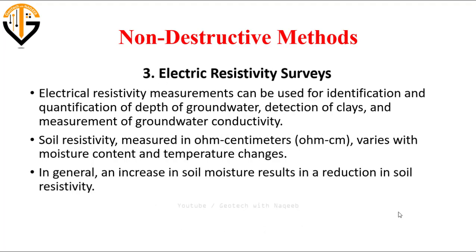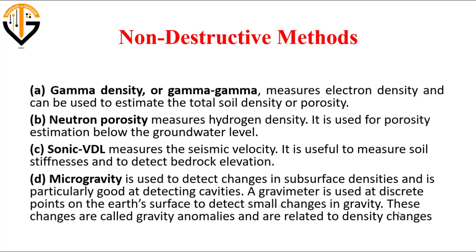The third non-destructive technique is electrical resistivity surveys. Electrical resistivity measurements can be used for identification and quantification of depth of groundwater table, detection of groundwater location, and measurement of groundwater conductivity. Soil resistivity, measured in ohm-centimeters, varies with moisture content and temperature changes. In general, an increase in soil moisture results in a reduction in soil resistivity — when moisture content is higher, electrical conduction increases and resistance decreases.